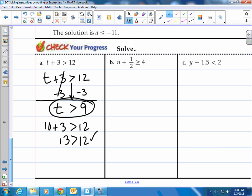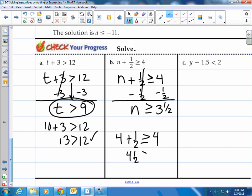How about the second one here? We have n plus 1 half is greater than or equal to 4. So I would write the problem. And then I'm going to get n by itself by subtracting away a half from this side and subtracting away a half from this side. And then we'll end up with, that will cancel out, n is greater than or equal to 3 and a half. Now we can check it by plugging any number greater than or equal to 3 and a half, like 4. If we plugged 4 in, let's see here, 4 plus 1 half, is that greater than or equal to 4? Sure is. It works out. That checks. 4 and a half is definitely greater than 4. Anything that equals 4 would work as well.